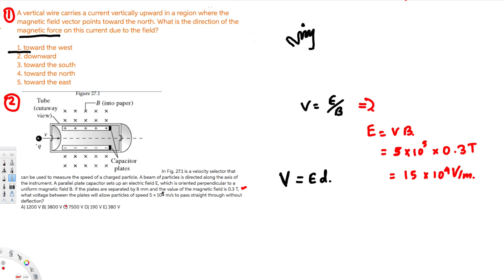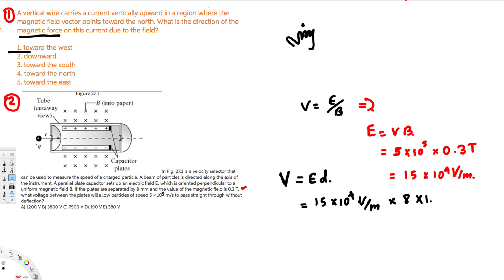So let's go ahead and calculate the voltage. V = E × d, where E is 15×10⁴ volts per meter, and the distance is 8 millimeters. To convert millimeters to meters, we multiply by 10⁻³. Calculating this gives us 1200 volts. That's the answer for the second question — the correct selection should be A. I hope you guys find this video helpful, see you next time!